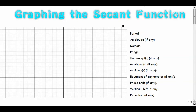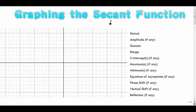All right, here's the fifth video out of six for my trig function graphing series. This is the secant function — our second reciprocal function. The last one was the cosecant video. The secant is defined as one divided by cosine.